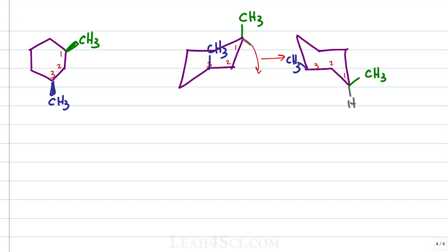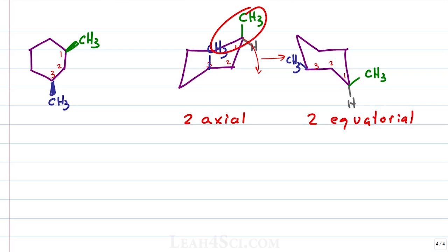And there we have it — a quick and simple ring flip that starts by drawing both chairs, figuring out where your substituents are located, and drawing them onto the molecule. Let's figure out which one is more stable. On the left we have two substituents that are axial; on the right, two substituents that are equatorial. Since axial substituents have unfavorable diaxial interactions, the left structure is less stable and the right structure is more stable.